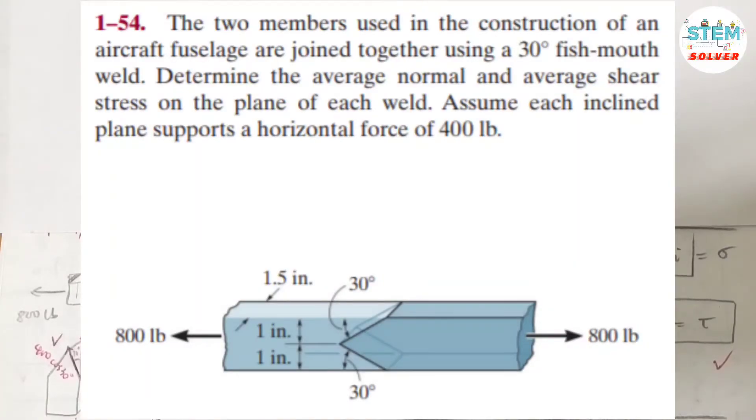The two members used in the construction of the aircraft's fuselage are joined together using a 30-degree fish-mouth weld. Determine the average normal and average shear stress on the plane of each weld. Assume each inclined plane supports a horizontal force of 400 pounds.